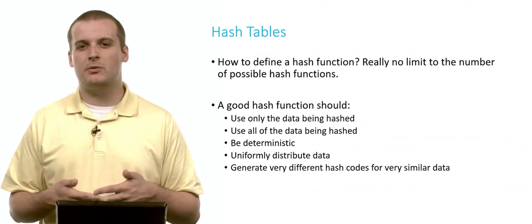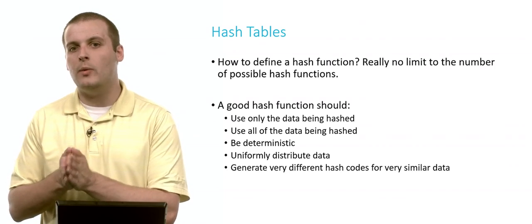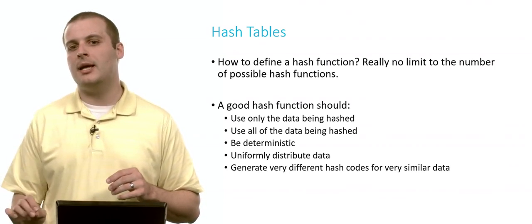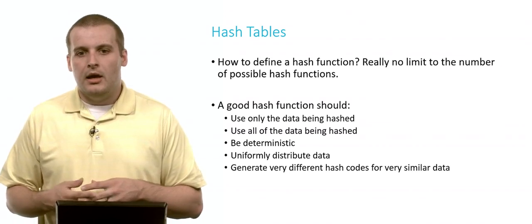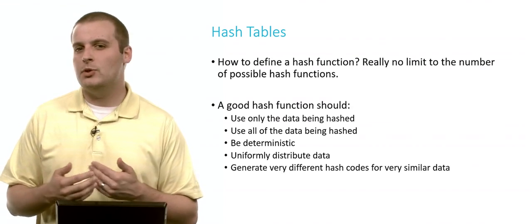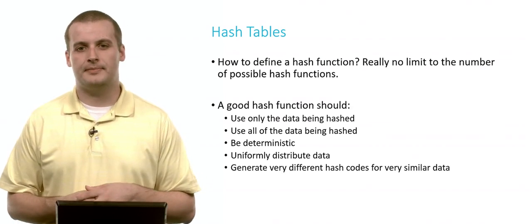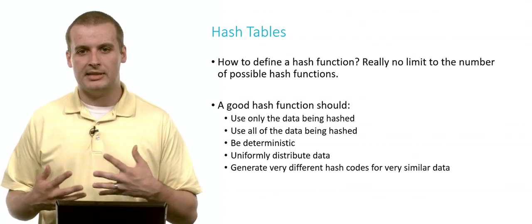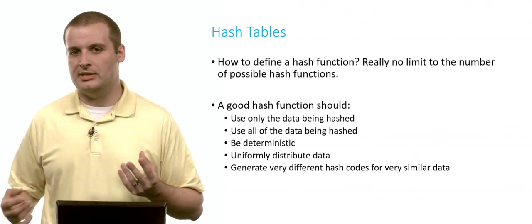A hash function should also be deterministic. It means that every time we pass the exact same piece of data into the hash function, we always get the same hash code out. If I pass John into the hash function, I get out 4. I should be able to do that 10,000 times, and I'll always get 4. A hash function should also uniformly distribute data. You probably want a big range of hash codes so things can be spread out throughout the table. And it would be great if really similar data like John and Jonathan were spread out to way different locations in the hash table.